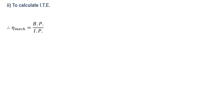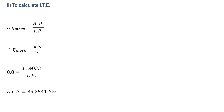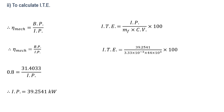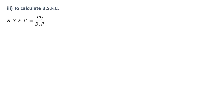To calculate indicated thermal efficiency, we first find indicated power using mechanical efficiency. Indicated power equals brake power divided by mechanical efficiency: 31.4033 / 0.8 = 39.2541 kW. Indicated thermal efficiency is indicated power divided by heat supplied (ṁ_F × CV). Substituting the values gives indicated thermal efficiency = 26.79%.